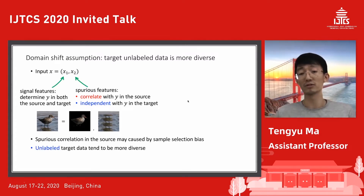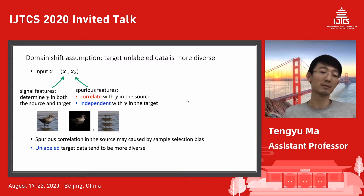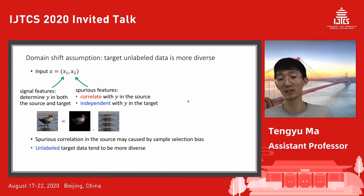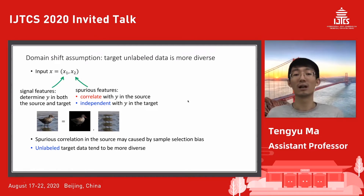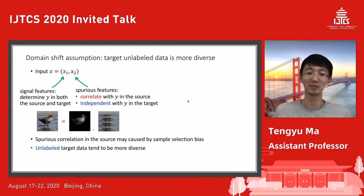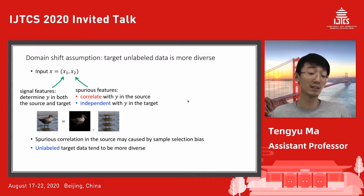Spurious correlations arise due to selection bias or natural co-occurrence in the source data. We want to remove these spurious features at test time because they may no longer exist in the target, or for fairness reasons. Unlabeled target data tends to be more diverse — for example, online images of birds have all different kinds of backgrounds. Mathematically, we assume a linear model with binary classification. We make minimal assumptions on the source; the main assumption is on the target, where we assume there exist two blocks of features x1 and x2 such that x1 is independent of x2 conditioned on y, x2 is Gaussian, and using x1 alone we can predict y. The linear model is y-hat = w^T x.